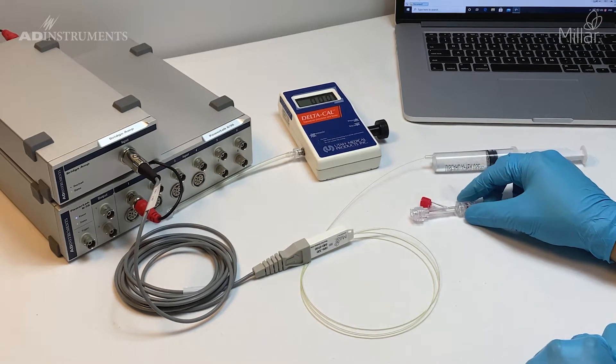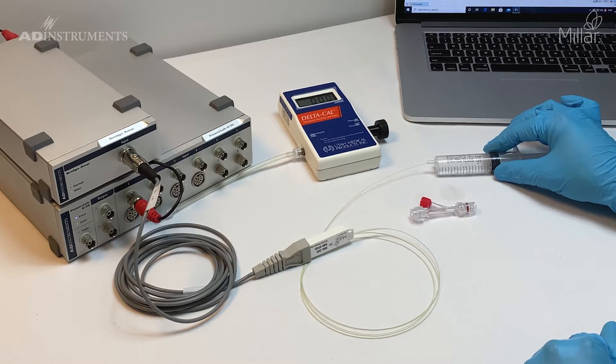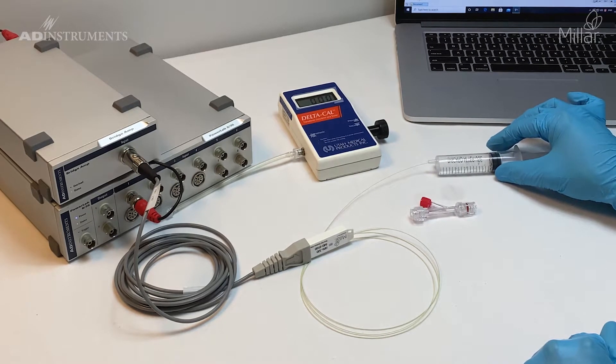The catheter needs to be soaked for at least 30 minutes in 37-degree saline.